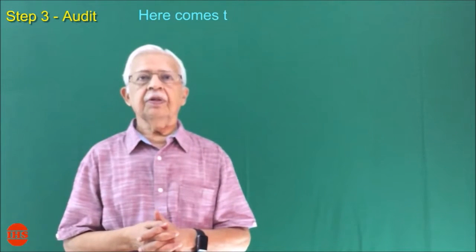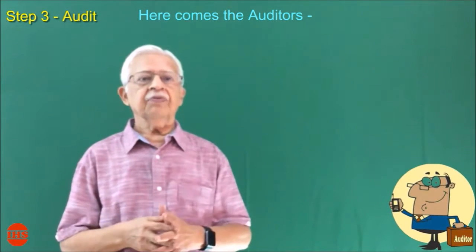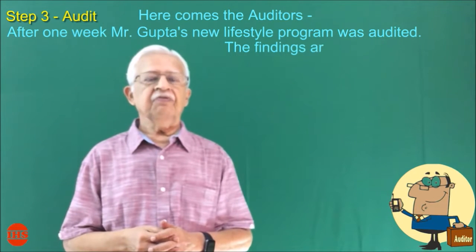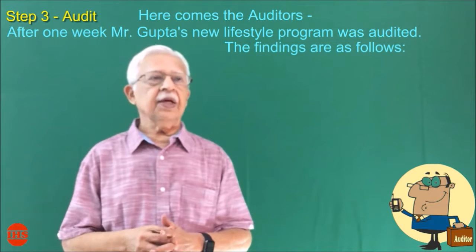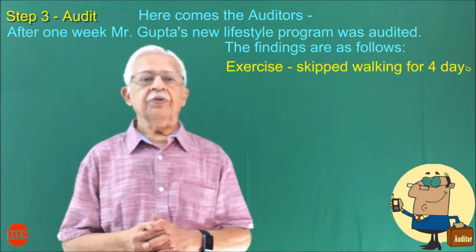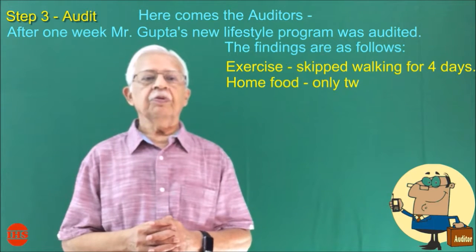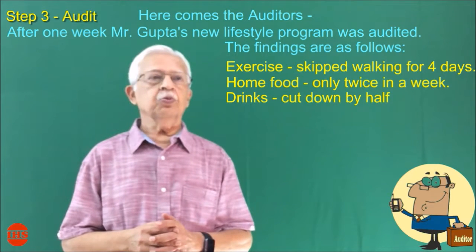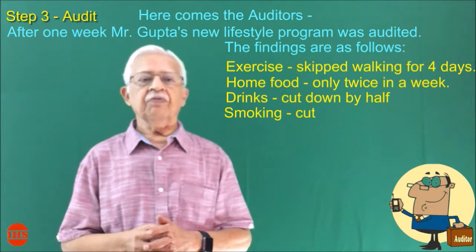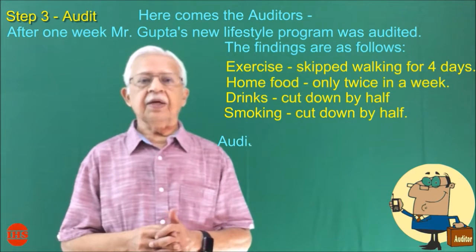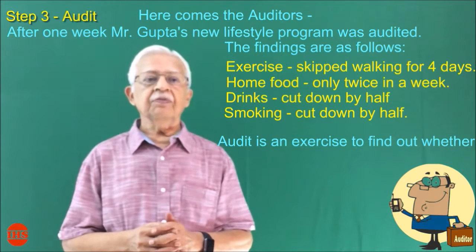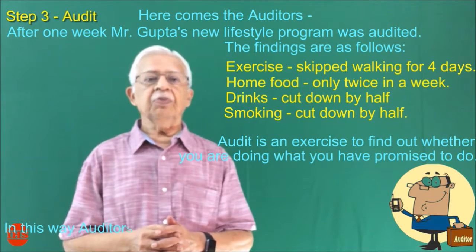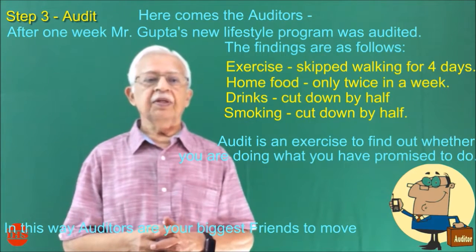Step 3: Audit. After one week, Mr. Gupta's new lifestyle program was audited. The findings are as follows — Exercise: skipped walking for four days. Home food: only twice in a week. Drinks: cut down by half. Smoking: cut down by half. Audit is an exercise to find out whether you are doing what you have promised to do. In this way, auditors are your biggest friends to move you in the right direction.